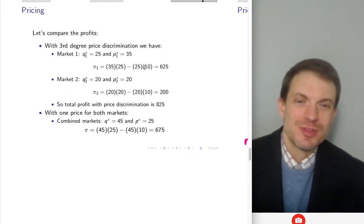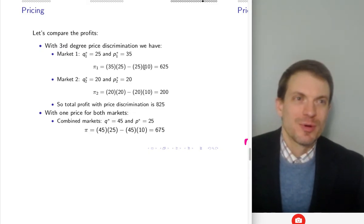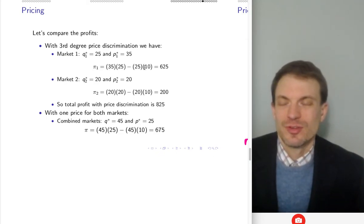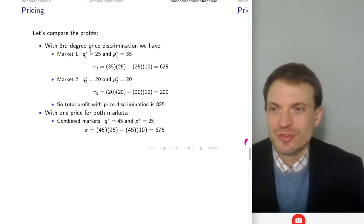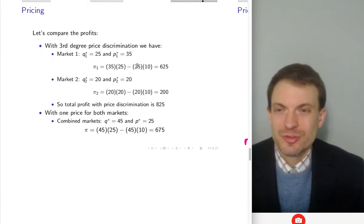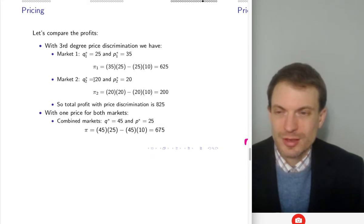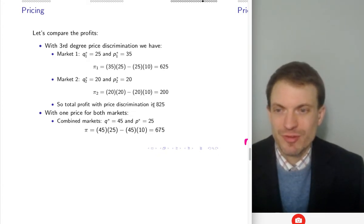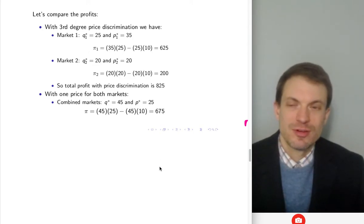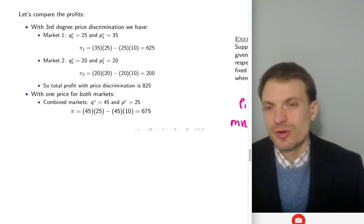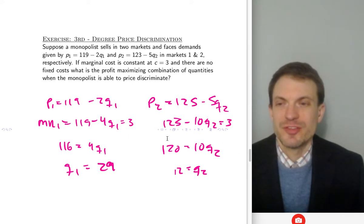Comparing profits: with price discrimination, profit from market one is (35 − 10) × 25 = $625, profit from market two is (20 − 10) × 20 = $200, total = $825. Without price discrimination, profit is (25 − 10) × 45 = $675. Third degree price discrimination increases profits by $150 in this example.